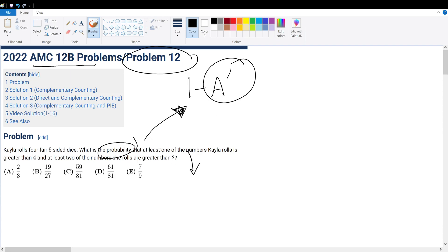Alright, so let's see what are the conditions given. At least one of the numbers Kayla rolls is greater than 4, and at least two of the numbers she rolls are greater than 2.